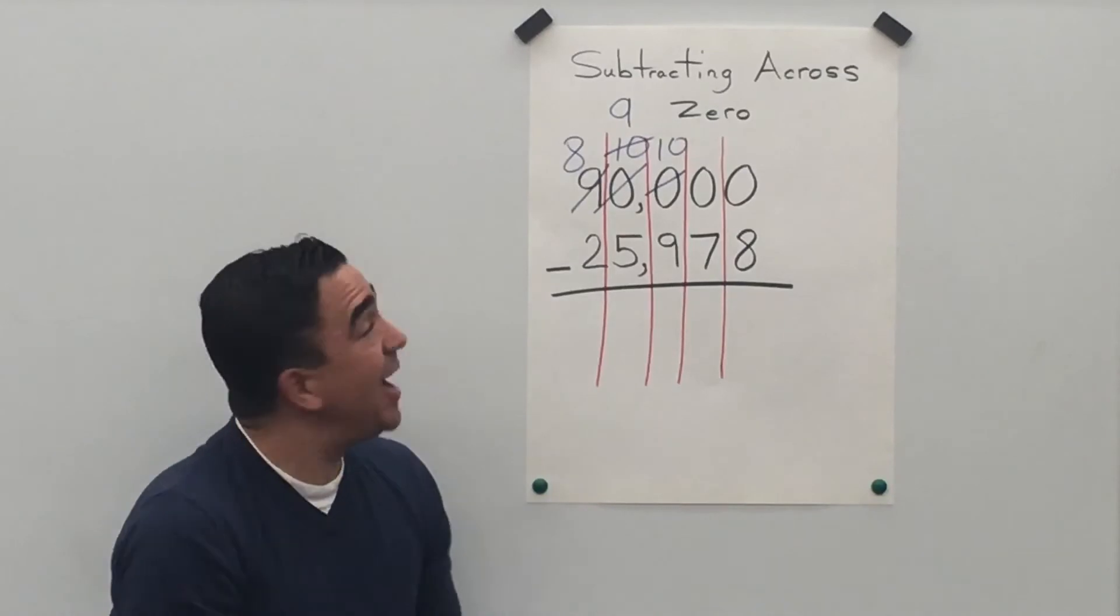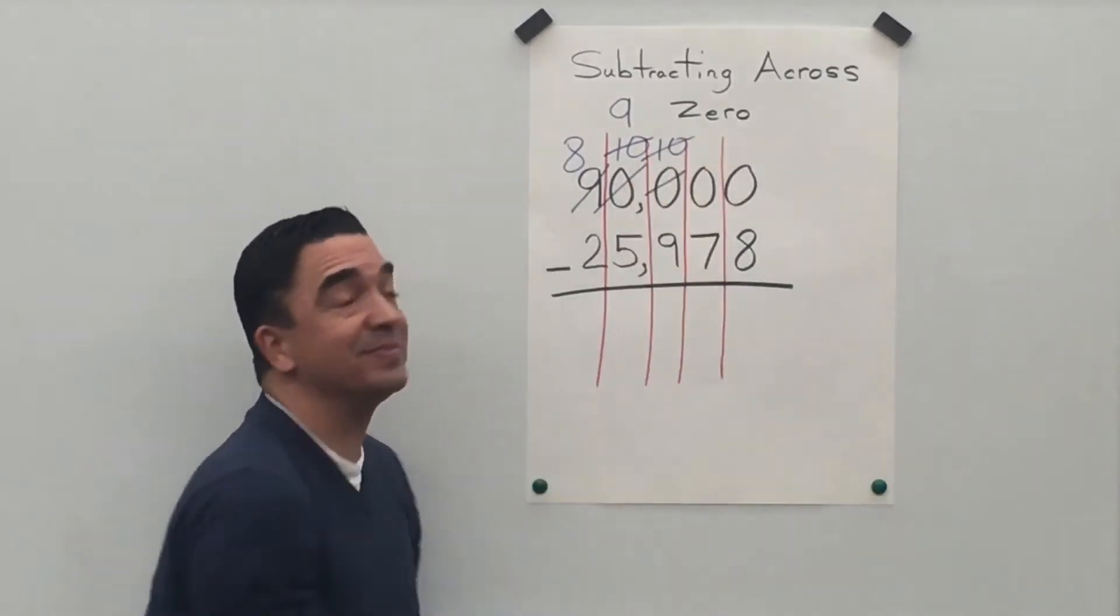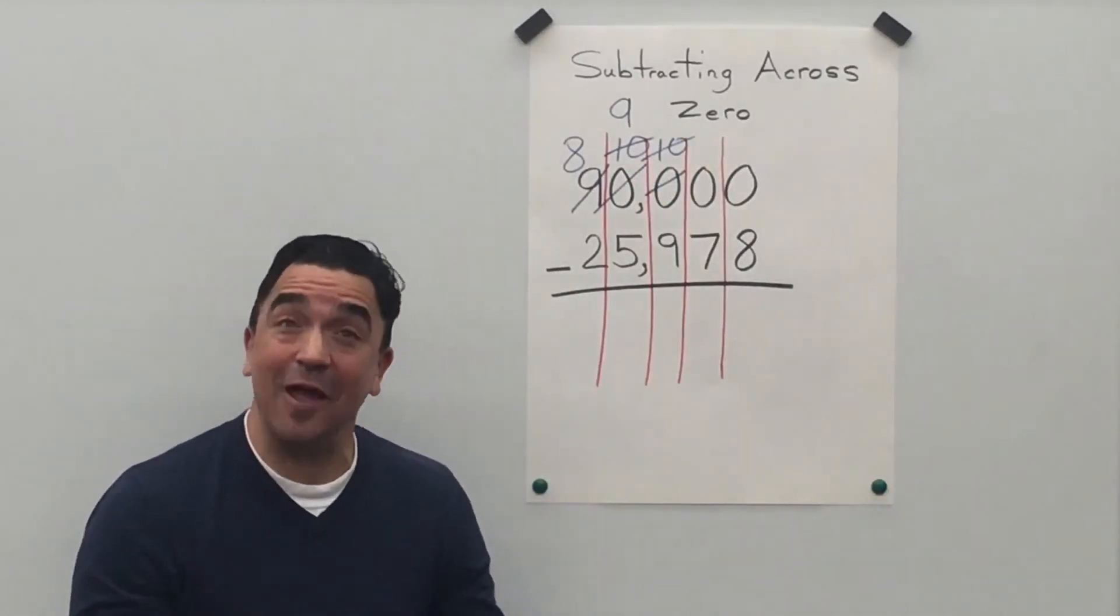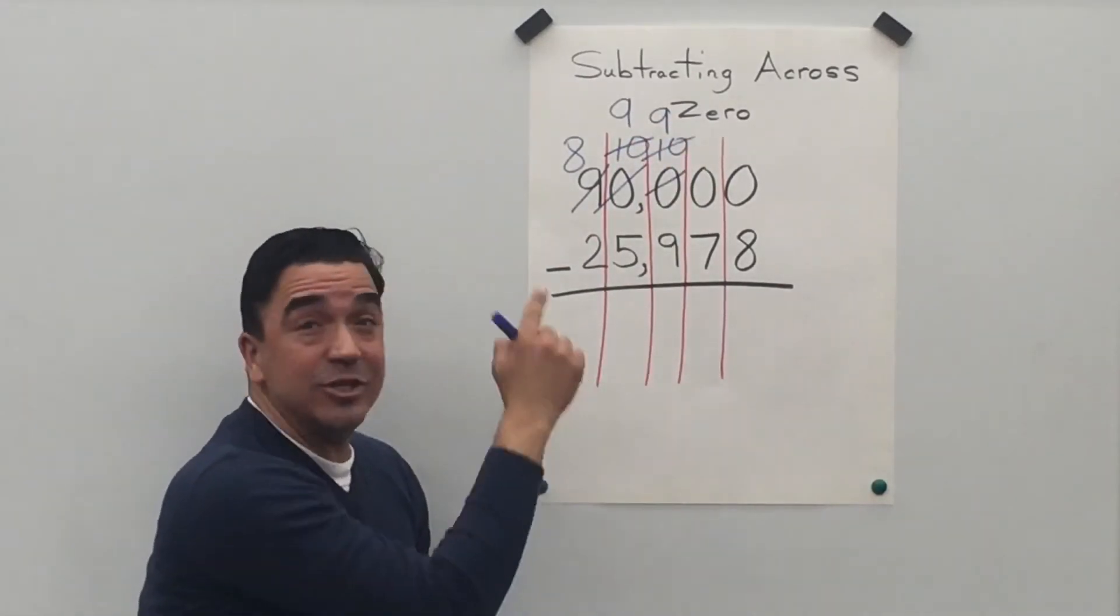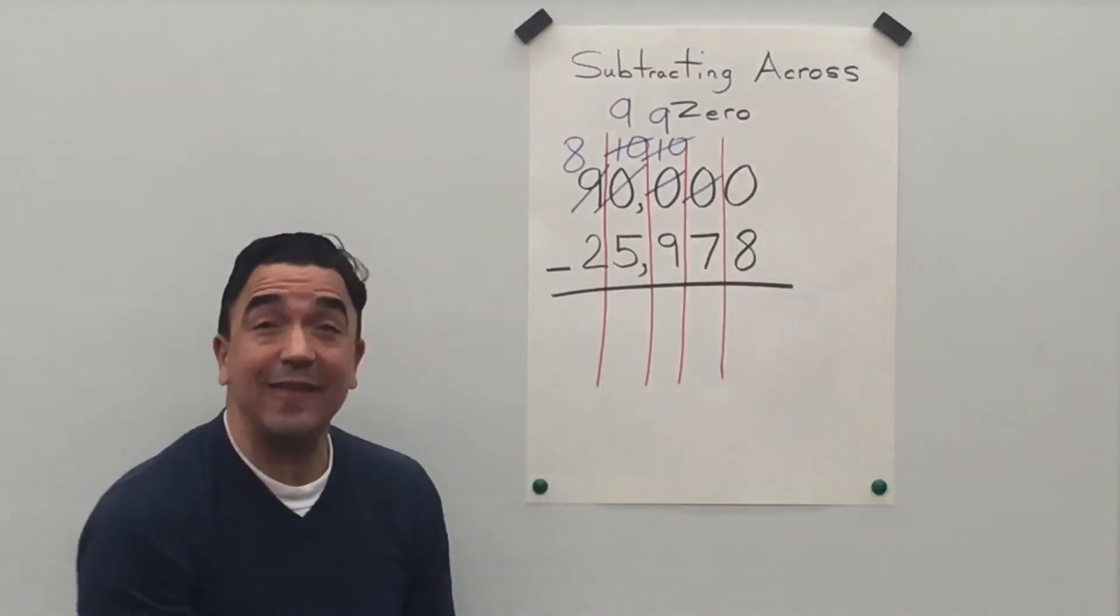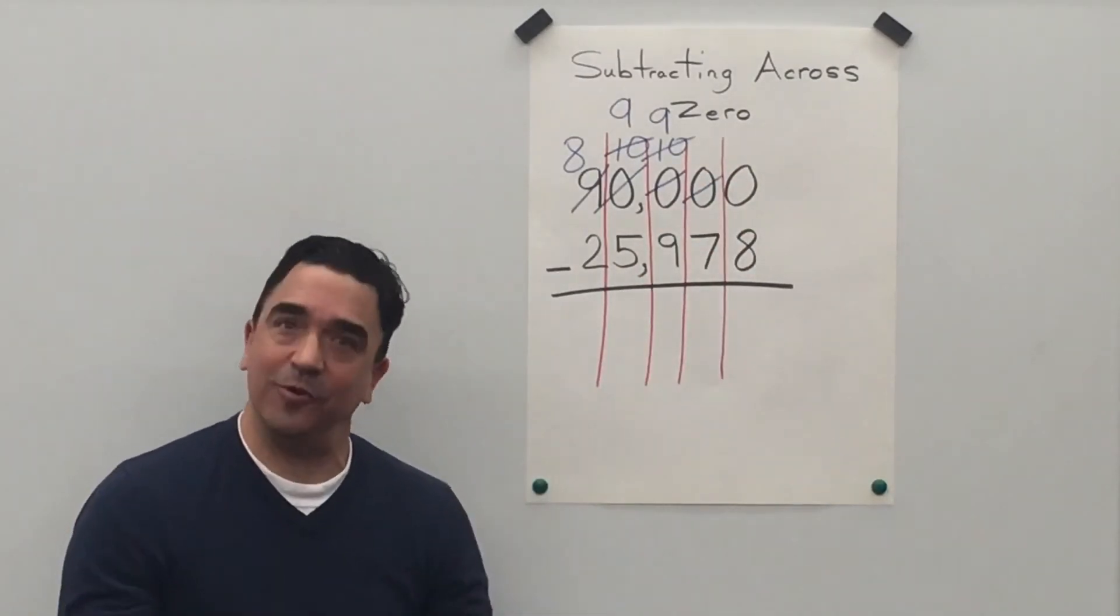Take one away from the ten. It becomes a nine. And we're going to change this zero in the tens place into a ten.